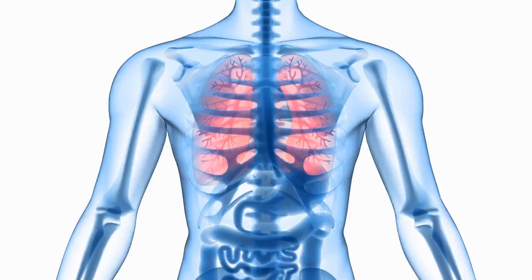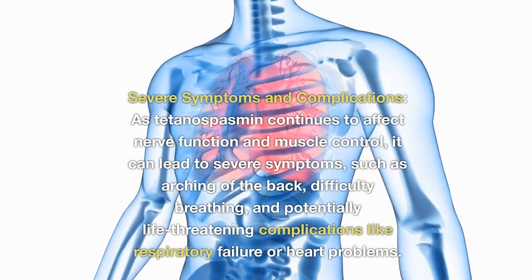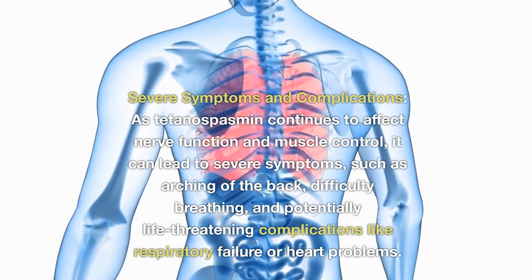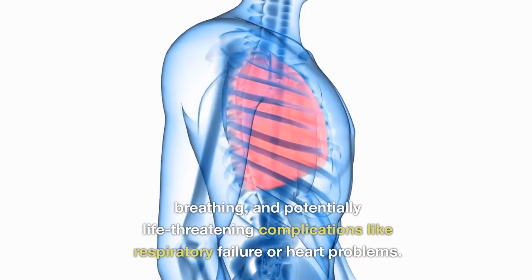Severe symptoms and complications: As tetanospasmin continues to affect nerve function and muscle control, it can lead to severe symptoms such as arching of the back, difficulty breathing, and potentially life-threatening complications like respiratory failure or heart problems.